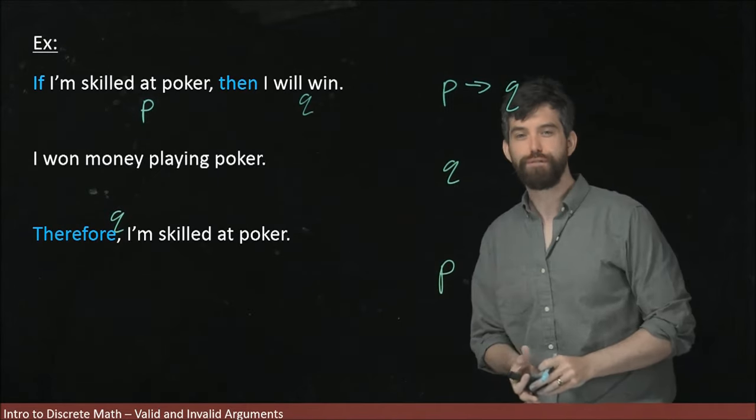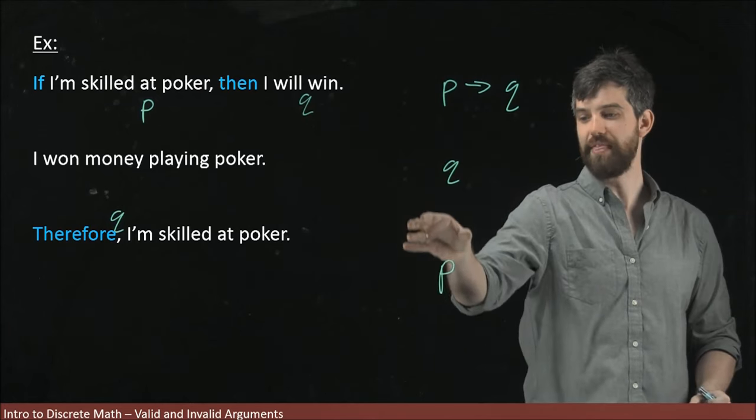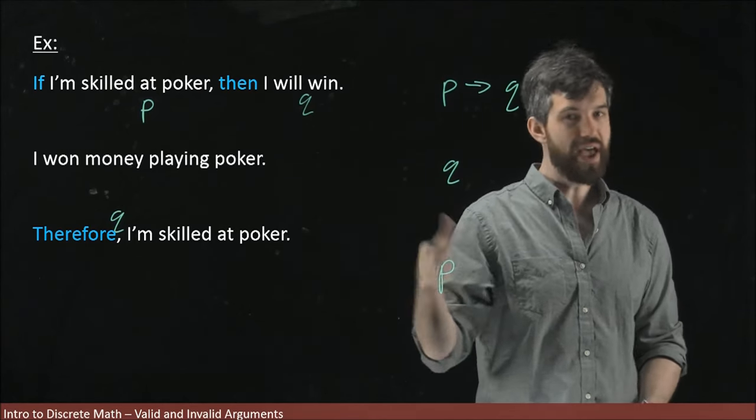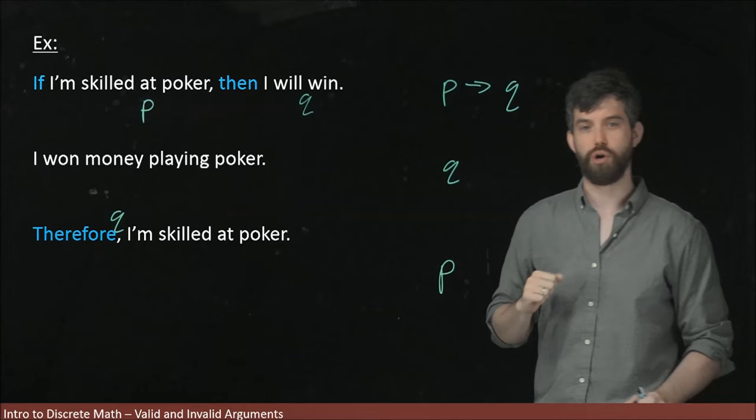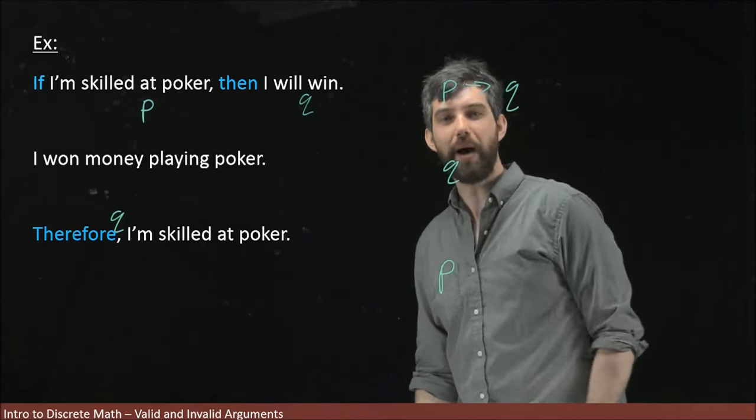So the logical form you have here is P implies Q, then Q, and then you get out P. But that wasn't modus ponens, that wasn't modus tollens, it was none of these. And the problem here is that you're arguing by the converse.